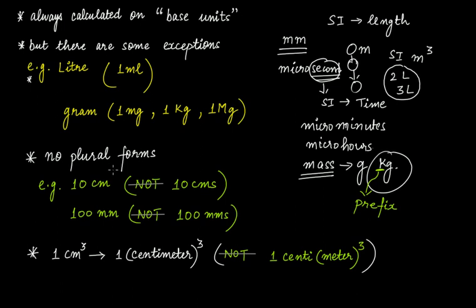The next important point is: no plural forms. It is 10 centimeter, not 10 centimeters. It is 100 millimeter, not 100 millimeters. Subsidiary units don't have plural forms. Also, it is 1 centimeter cubed — cubic centimeter — meaning this whole unit raised to the power of 3, and not '1 centicubic meter.' It's 1 cubic centimeter, not 1 centicubic meter.